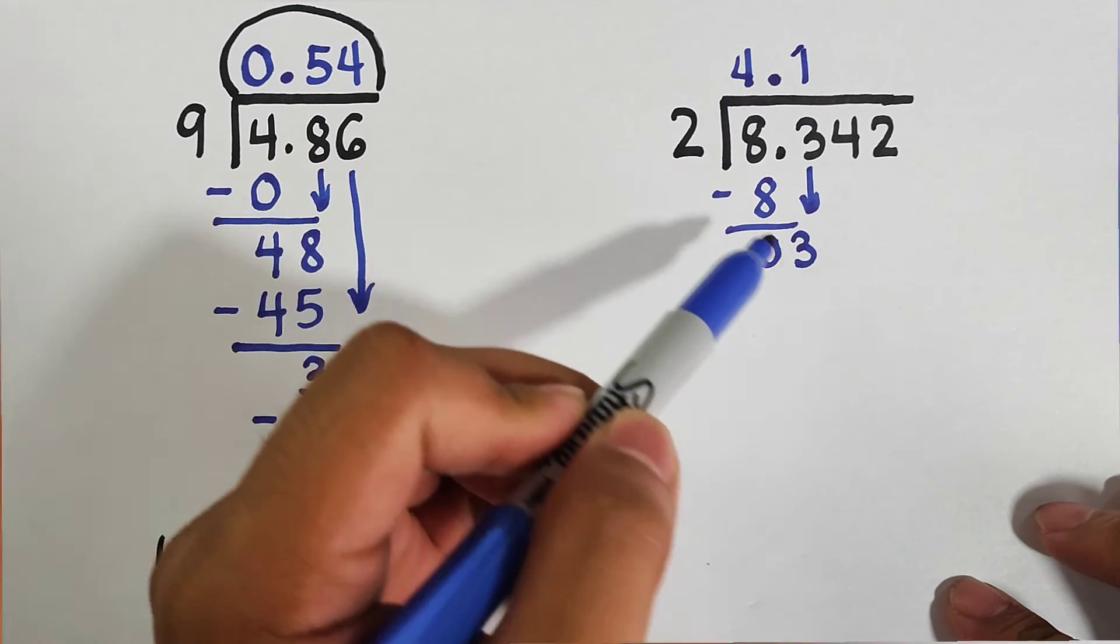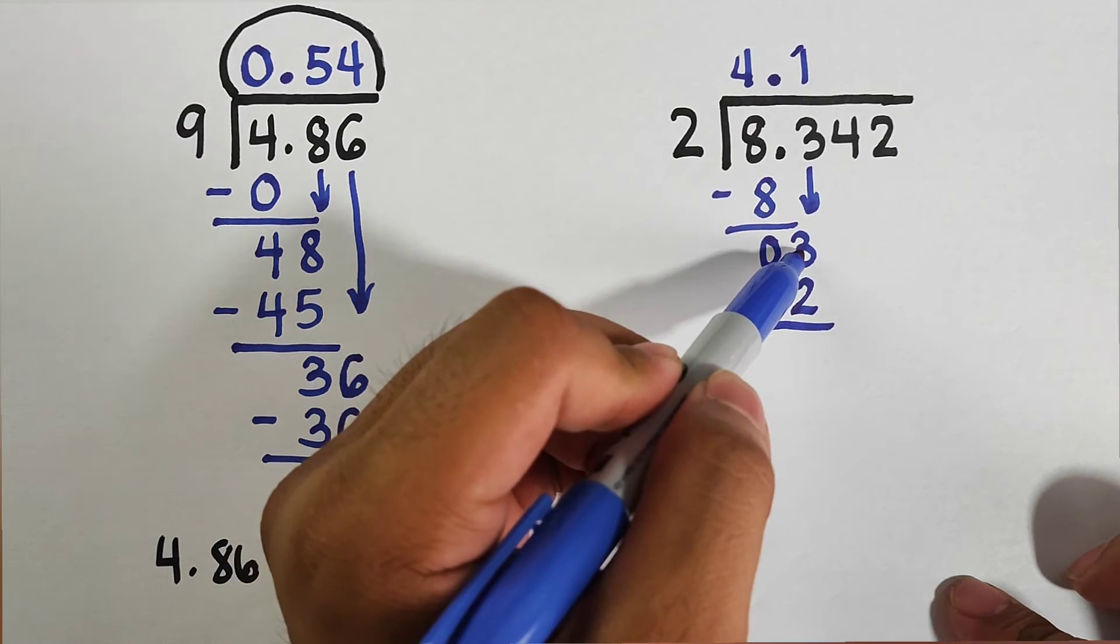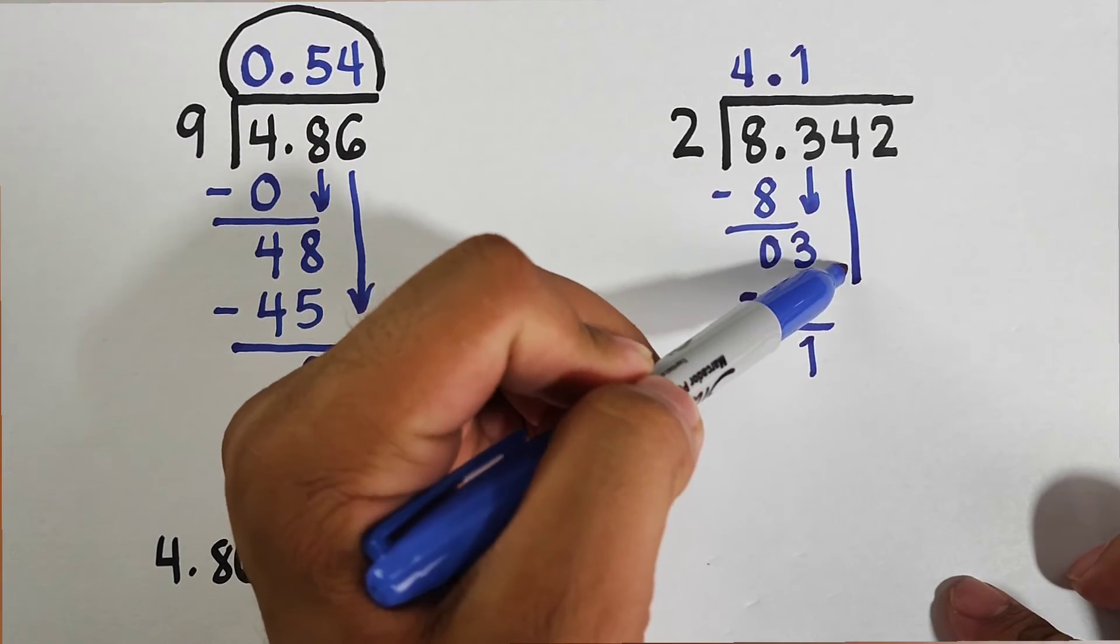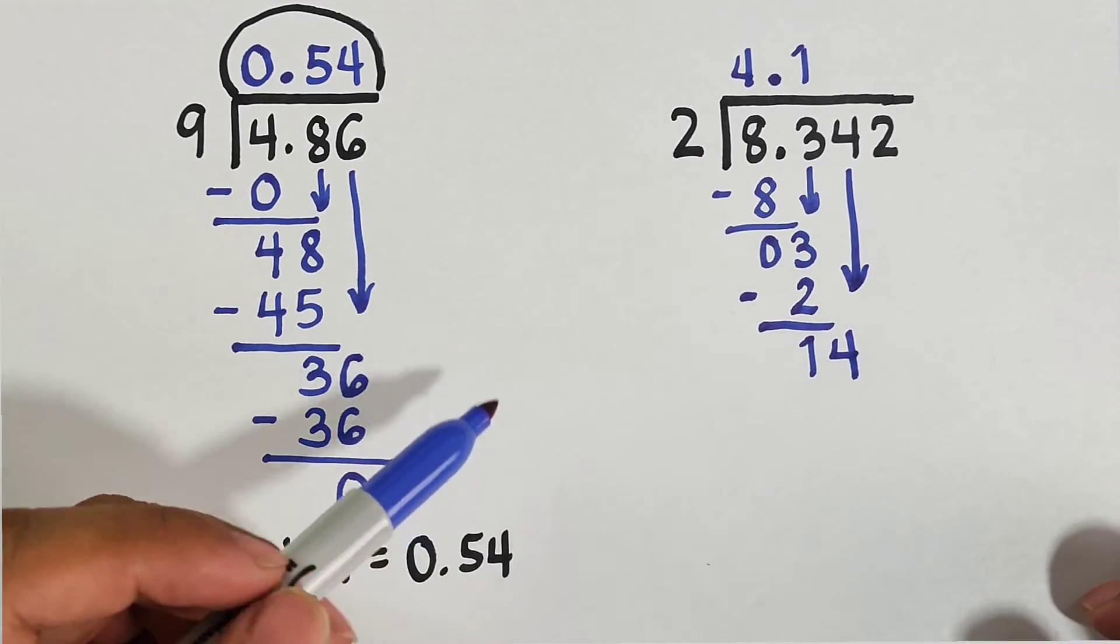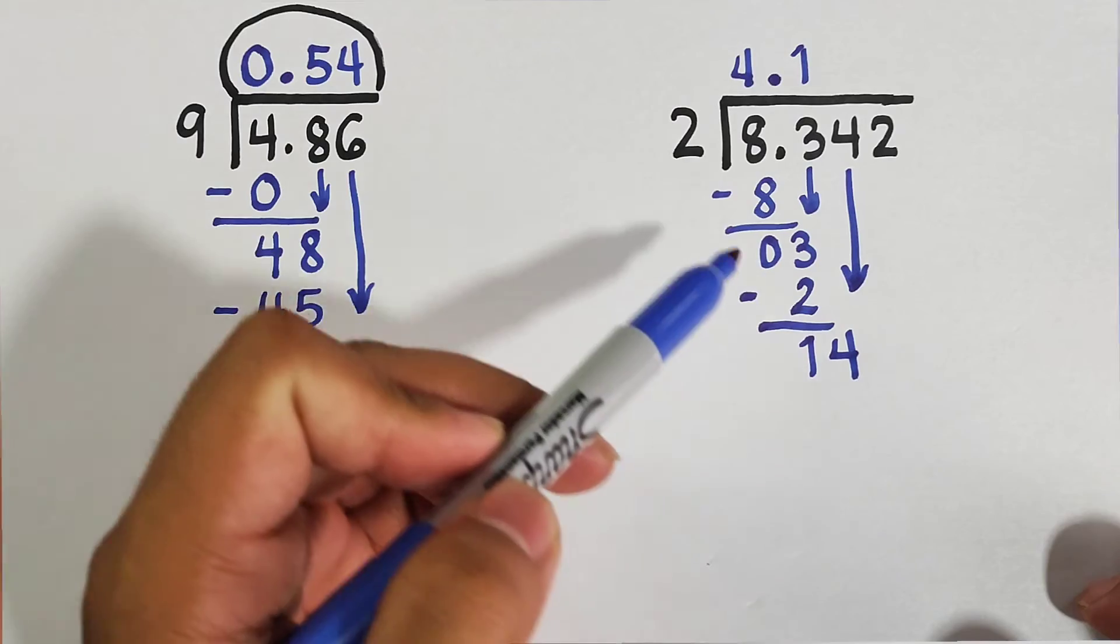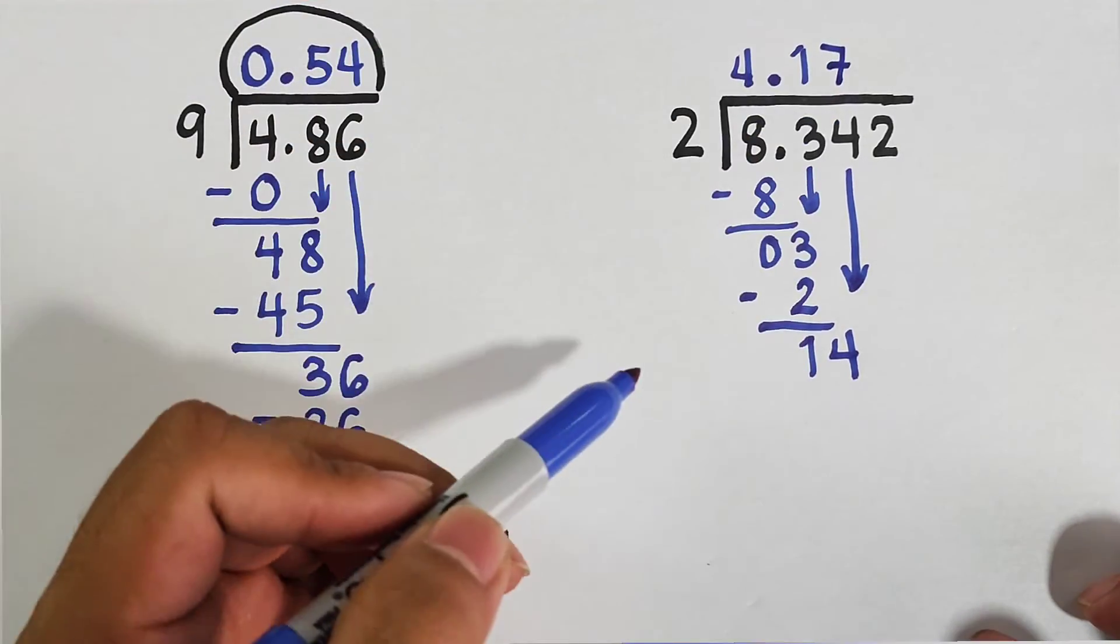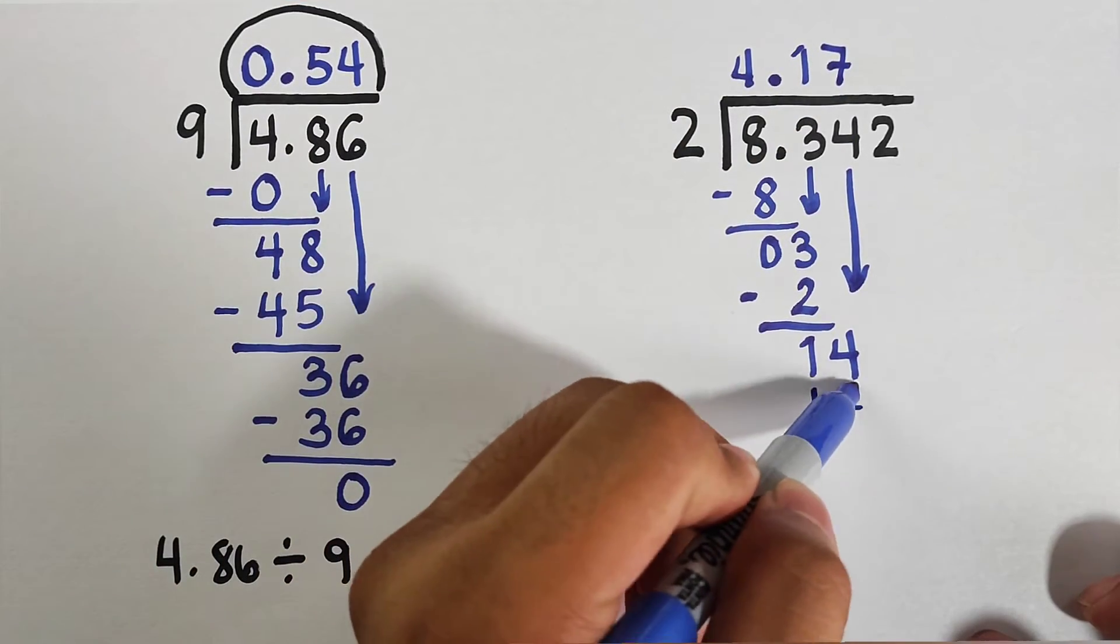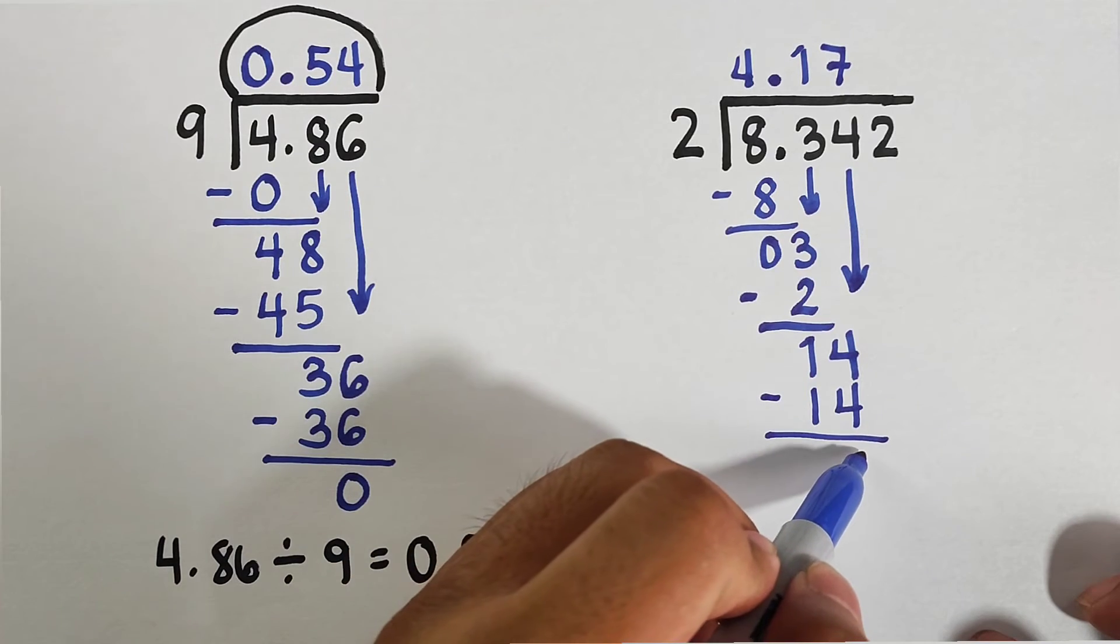Then we will bring down 3. So what we have now is 3. 3 divided by 2 equals 1. 1 times 2 equals 2. Then we will subtract 3 minus 2, equals 1. Bring down 4, so what we have now as our new dividend is 14. 14 divided by 2 equals 7.